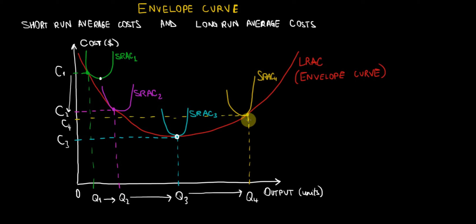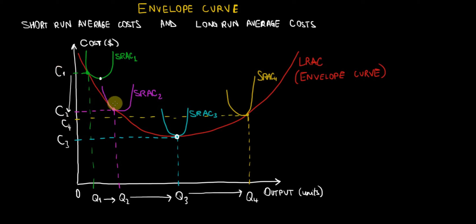Nevertheless, compare the level of Q4 with the beginning level of Q1. After so much production, we can create much more output at an average cost of only C4. The average cost C4 is still significantly lower than the beginning average cost C1. That's because we have been producing, employing fixed factors of production, and our labor has been specializing. Our factors of production become more and more efficient the more we produce, so over the long run we achieve higher output with a lower average cost per unit.